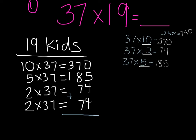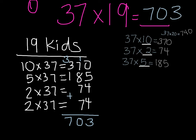Adding the ones: 5 plus 4 plus 4 — I know 4 plus 4 is 8, plus 5 is 13. Carry the 1. Tens: 7 plus 7 plus 7 is 21, plus 8 is 29, plus 1 carried is 30. Bring down the 0, carry the 3. Hundreds: 3 plus 3 plus 1 carried is 7. So the answer is 703. That's one way cluster problems help me figure that out.